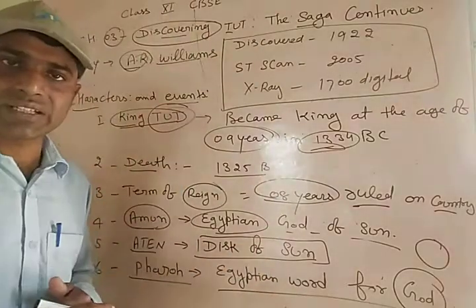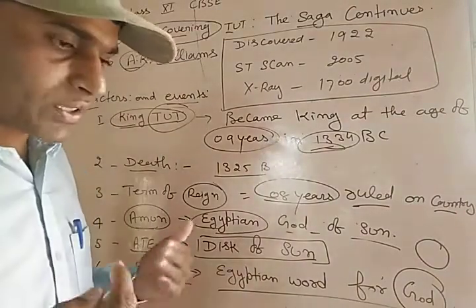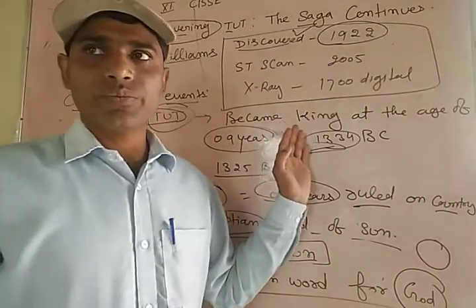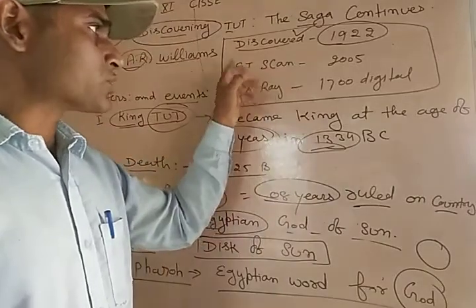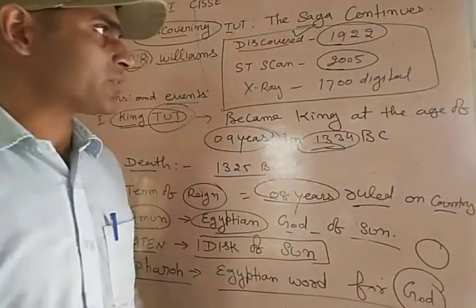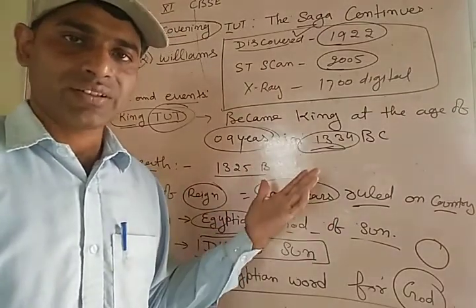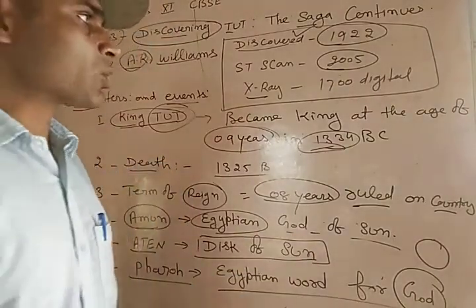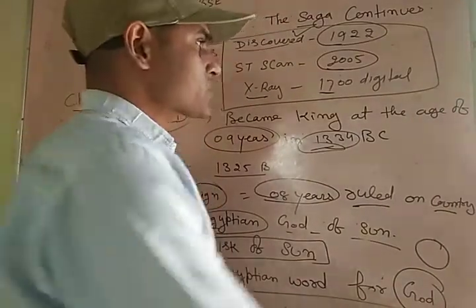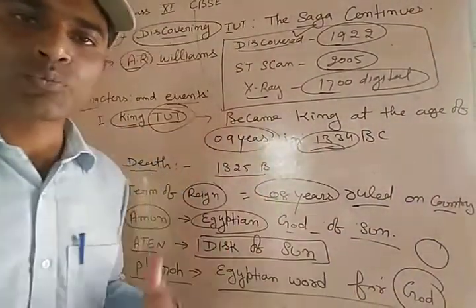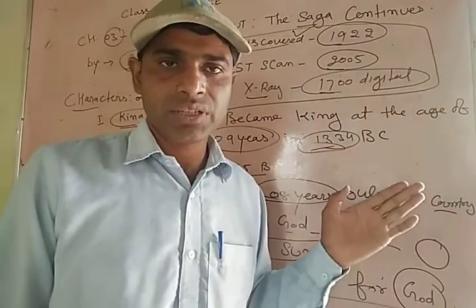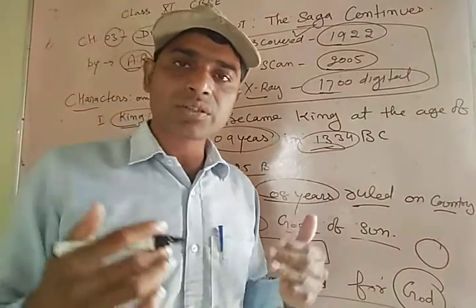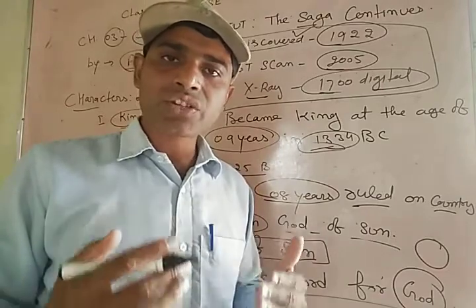In 1922, Carter discovered Tut's tomb. Then in 2005, it was CT-scanned — it was the first mummy to be CT-scanned. Before the CT scan, X-rays were used. Around 1,700 digital X-rays were taken at that time to get to the mystery of the death. Archaeologists wanted to know about the mystery of how he died.